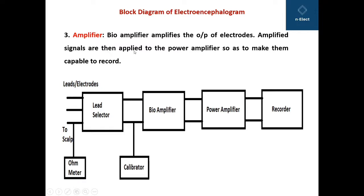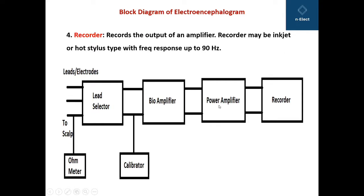The amplified signals are then applied to the power amplifier so as to make them capable of being recorded. The signals at the output of the bioamplifier do not have enough strength to be easily recorded, so they need further amplification done by the power amplifier. The recorder is a recording device that records the output of the amplifier; it may be an inkjet or hot stylus type with a frequency response up to 90 Hz.